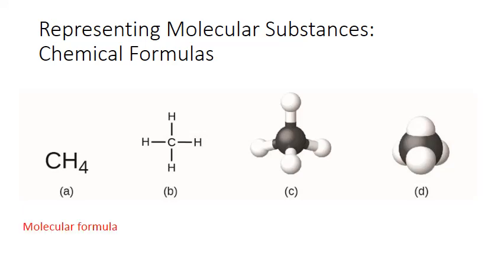The first and most common is the molecular formula, which shows the type of each element using element symbols and the number of atoms of that element using subscripts following the symbols. This is the molecular formula for methane gas, which contains one carbon and four hydrogens in each molecule.